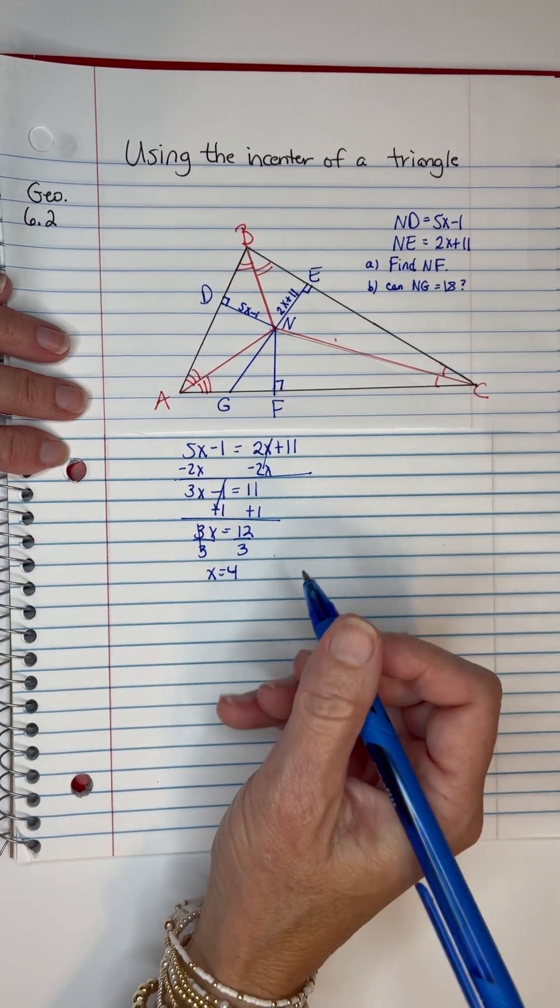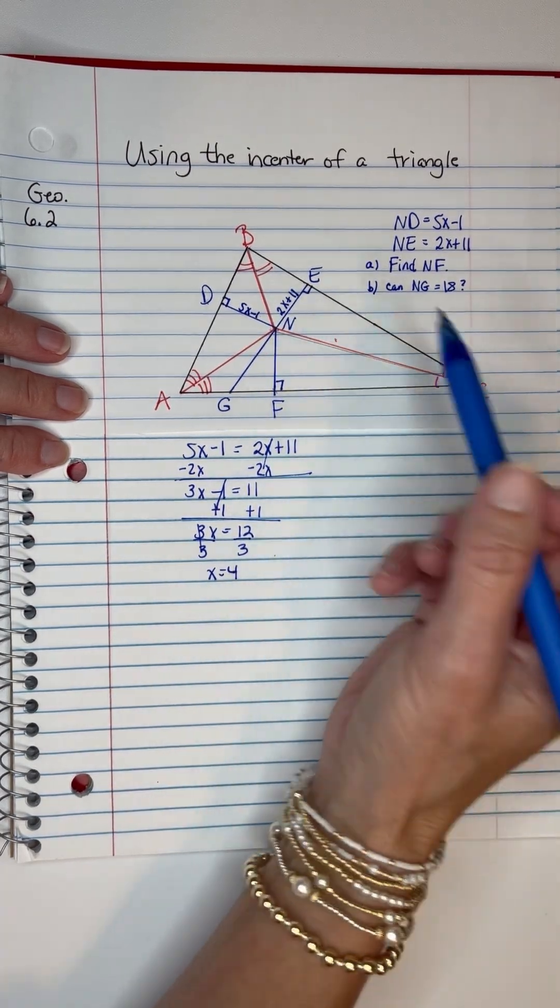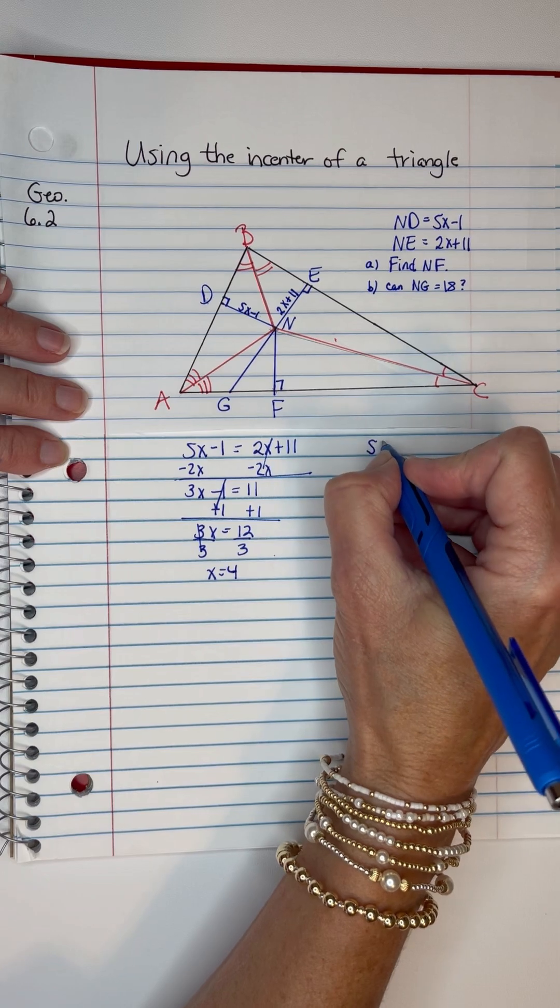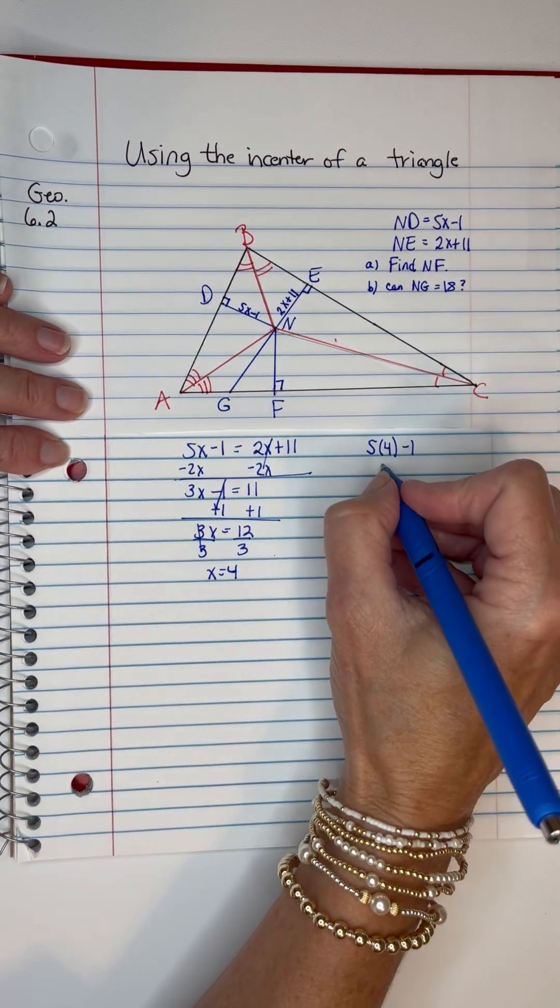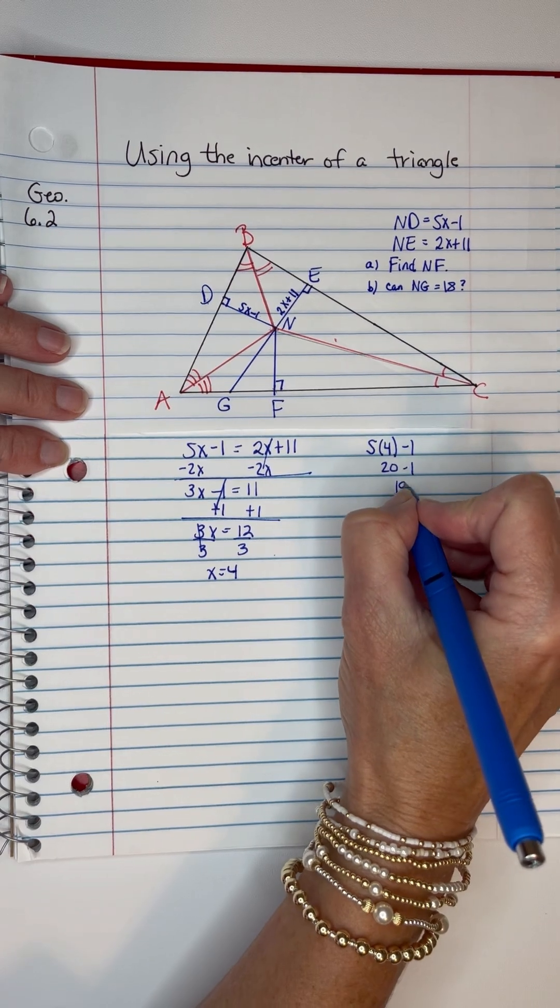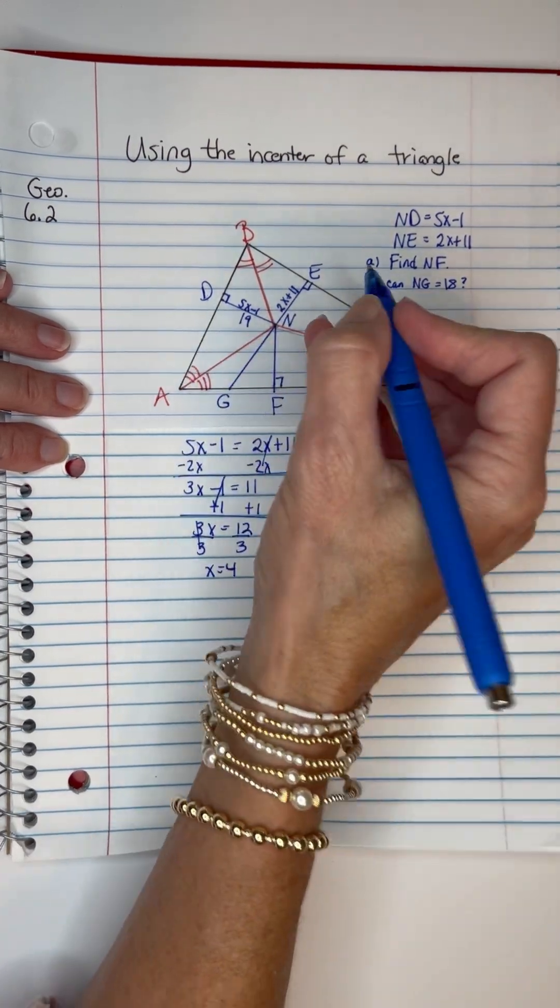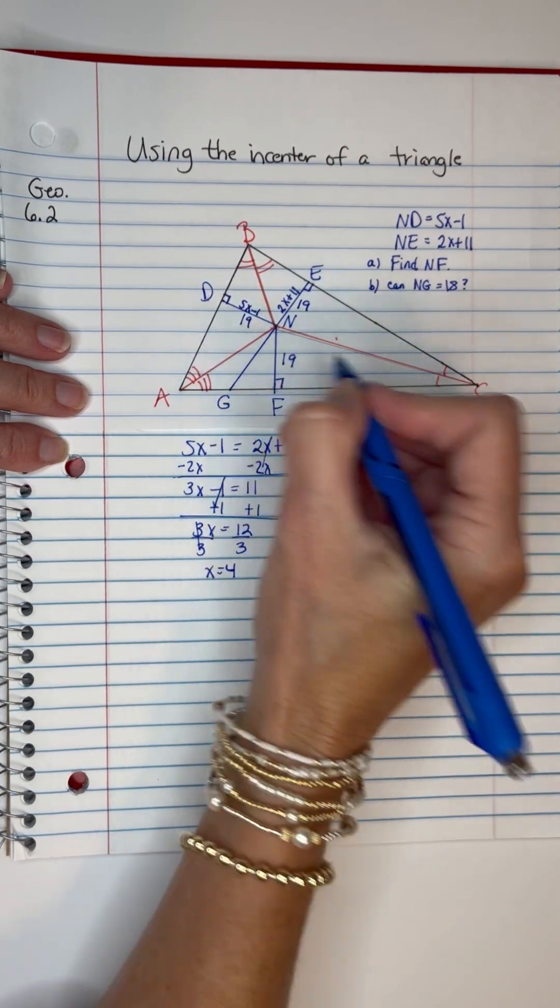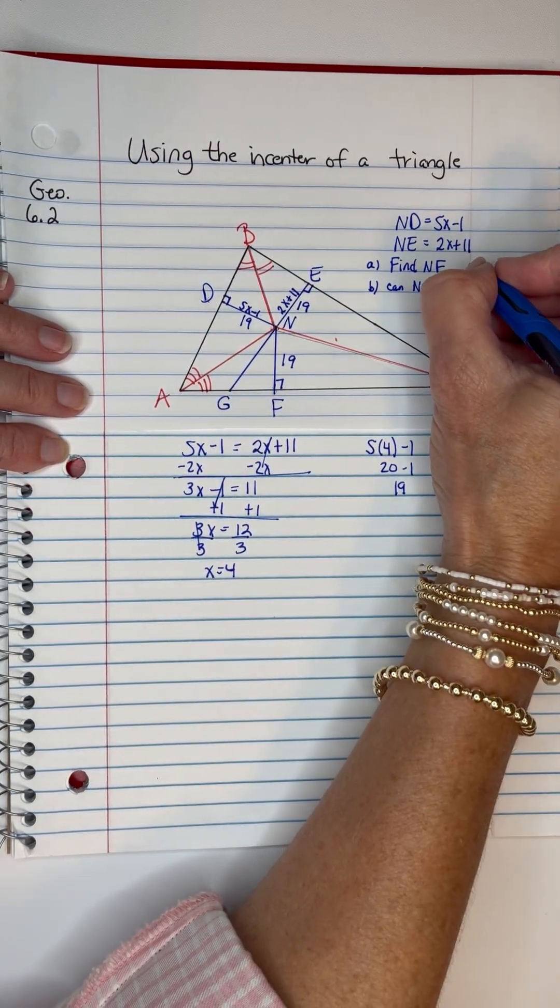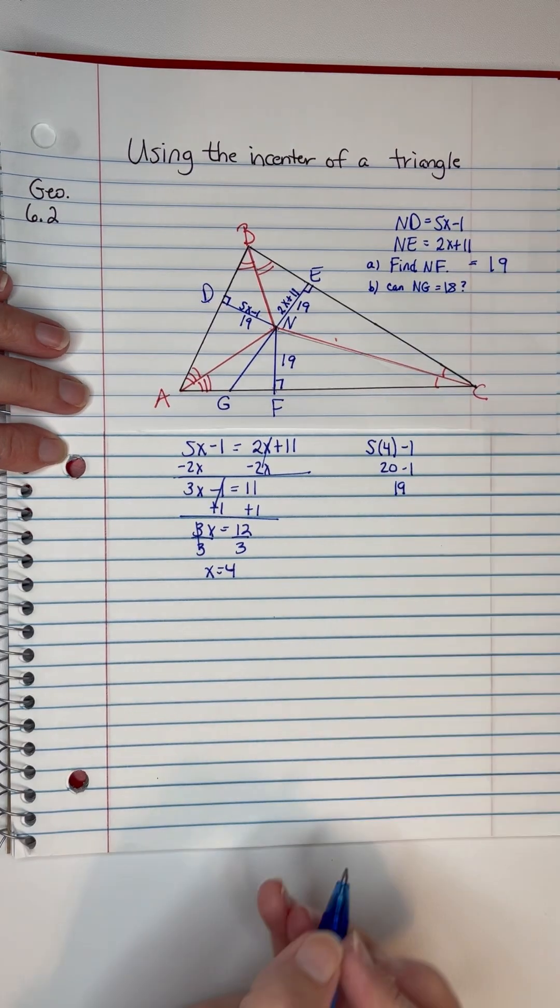Now plug that into either one of those, it does not matter. 5 times 4 minus 1, so I use this one. That's 20 minus 1, which is 19. So that means DN is 19, NE is 19, and NF is 19. So there's part of my answer.